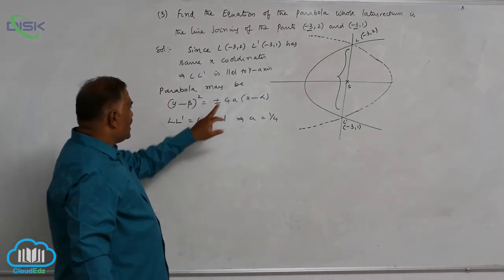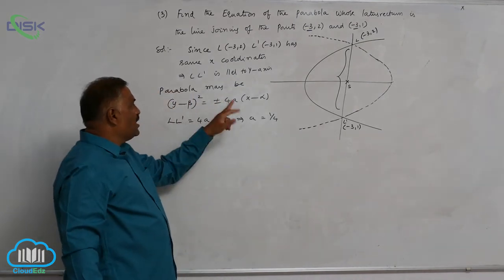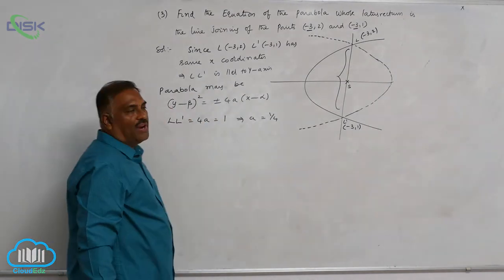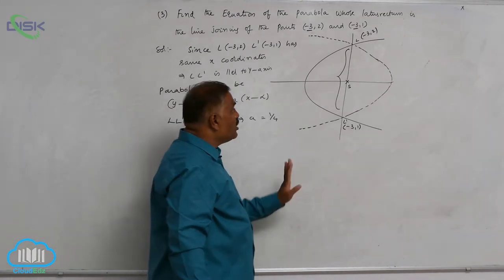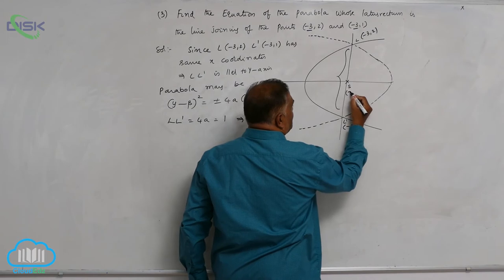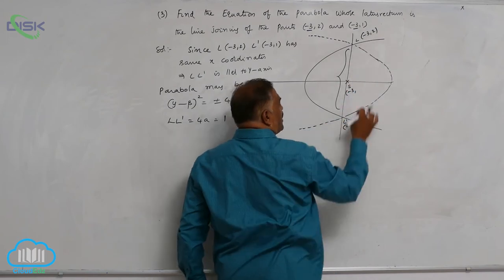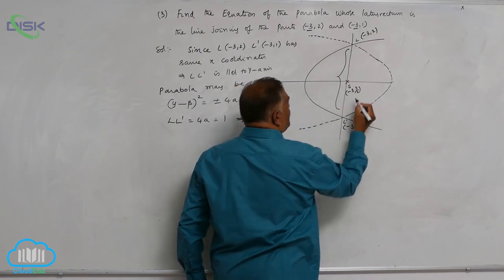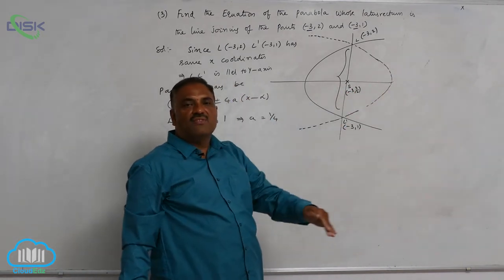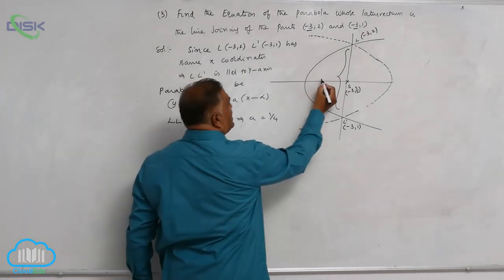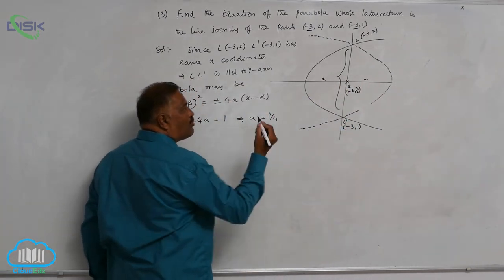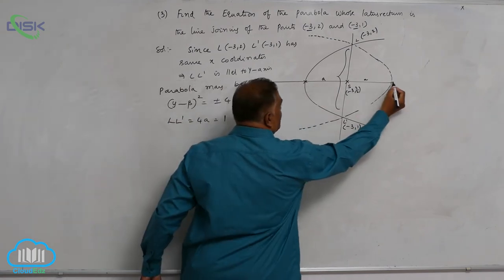Now to write down this equation, we require the 4a value as well as (α, β). How to find α, β? We know that S is the midpoint of these two points. So this is (-3, (2+1)/2) = (-3, 3/2). And you know that the distance between vertex and focus is always a. So this is a or this is also a. You can have two possible vertices like this or like this.